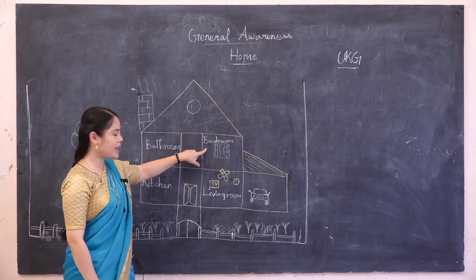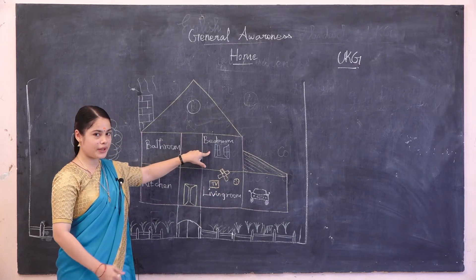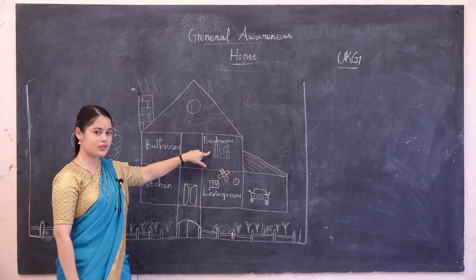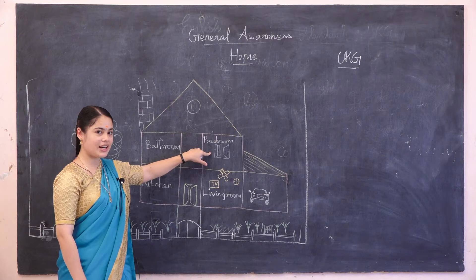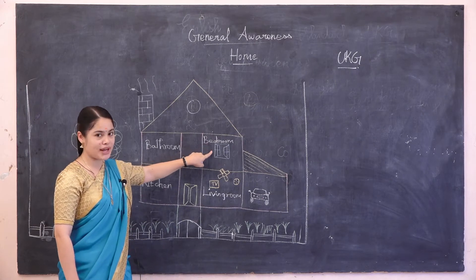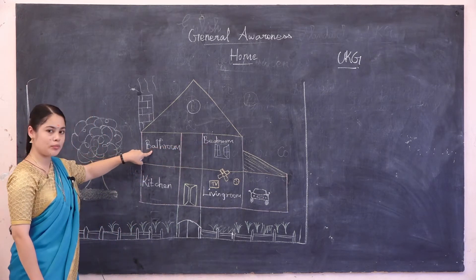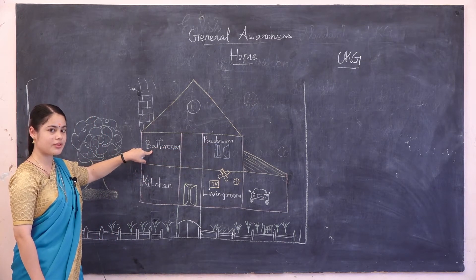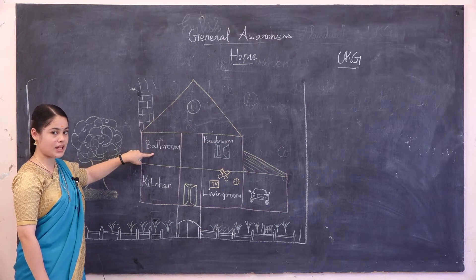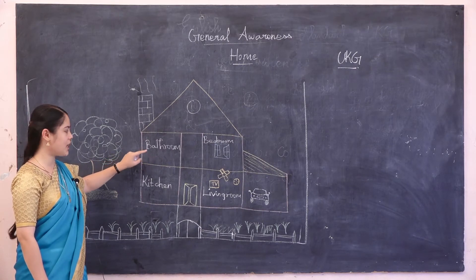Bedroom — bed, pillow, bedsheet. Bedroom. Then bathroom — bathtub, towel and soap.